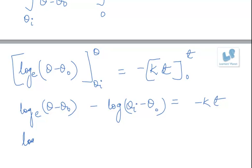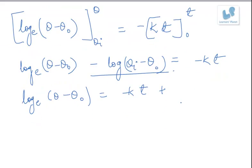Which can be written as log to the base e of theta minus theta naught is equal to minus Kt plus this value which is basically a constant, so we can write it as C.